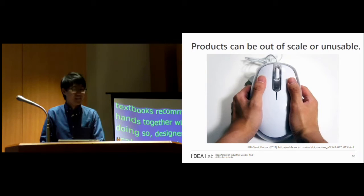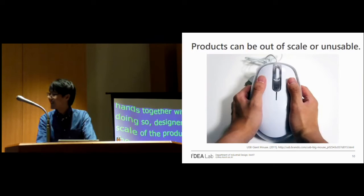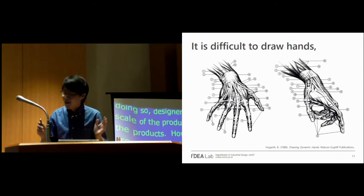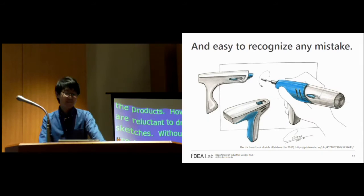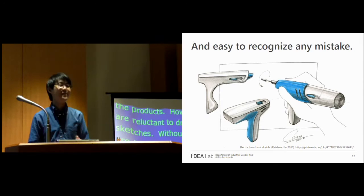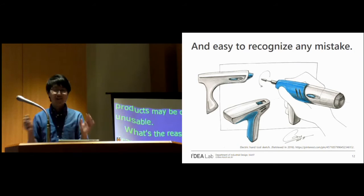So what's the reason designers don't draw hands? First, hands are difficult to draw because of their complex shapes and structures. Secondly, it's easy to recognize any mistake on hands because we are so familiar with how hands look like. We can find this hand looks weird and it's hard to focus on the product.